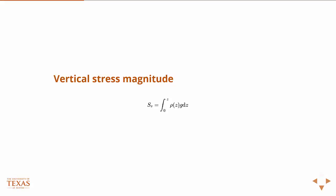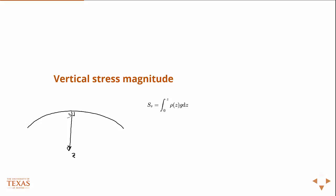So, how do we estimate the vertical stress? It's pretty easy, actually. It's just the integral from — our coordinate system points into the Earth, so we have the surface of the Earth, the z direction points into the Earth, perpendicular to the surface. So this is zero. It's just the integral from zero to whatever depth you're interested in, z, of the density function times gravity.